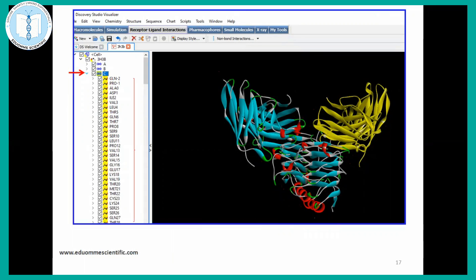In chain C, if you want to further check what amino acids are present, you can also get these detailed information from here.